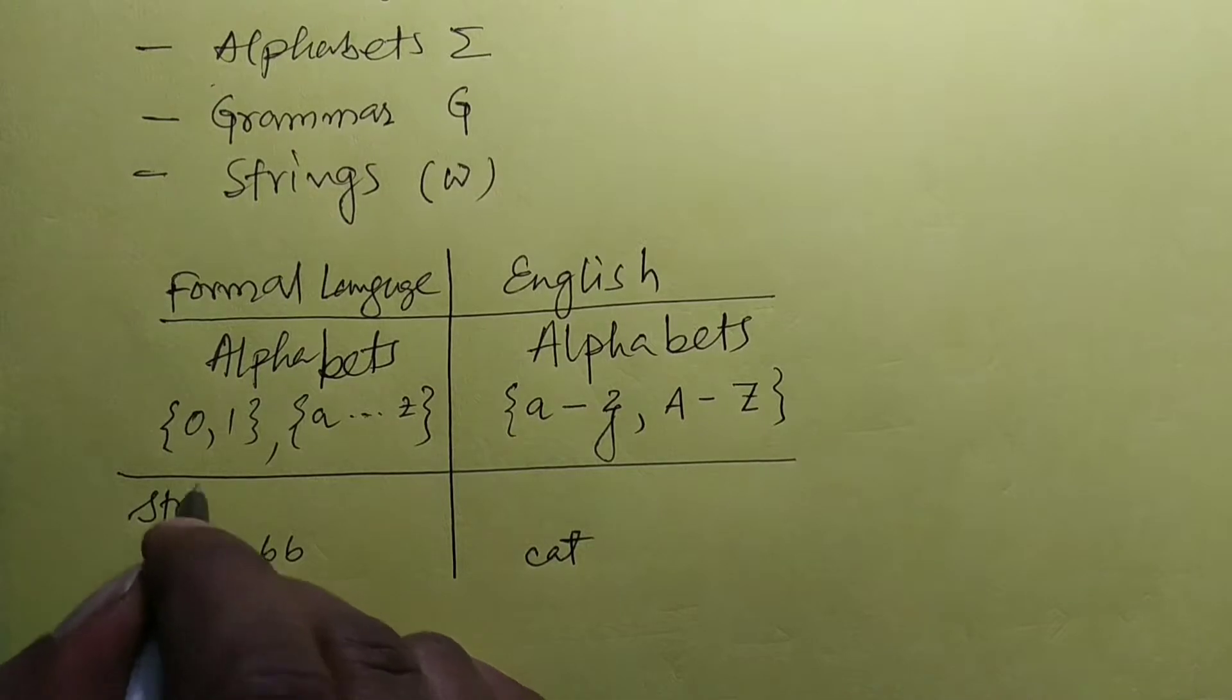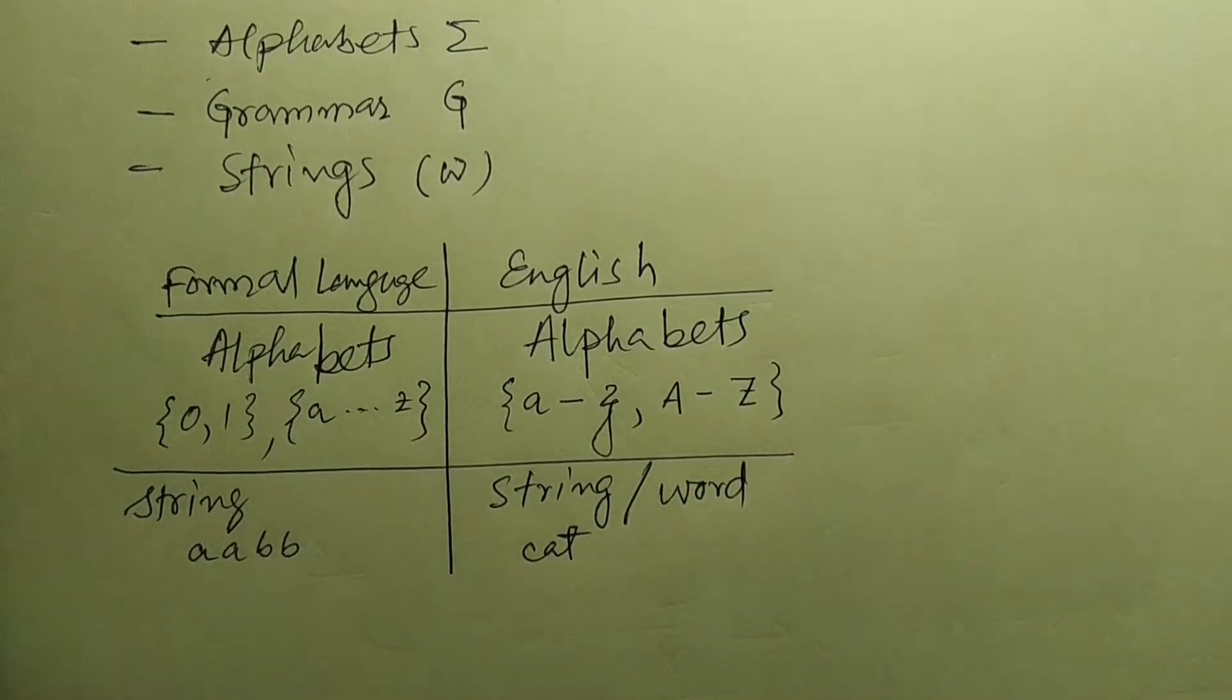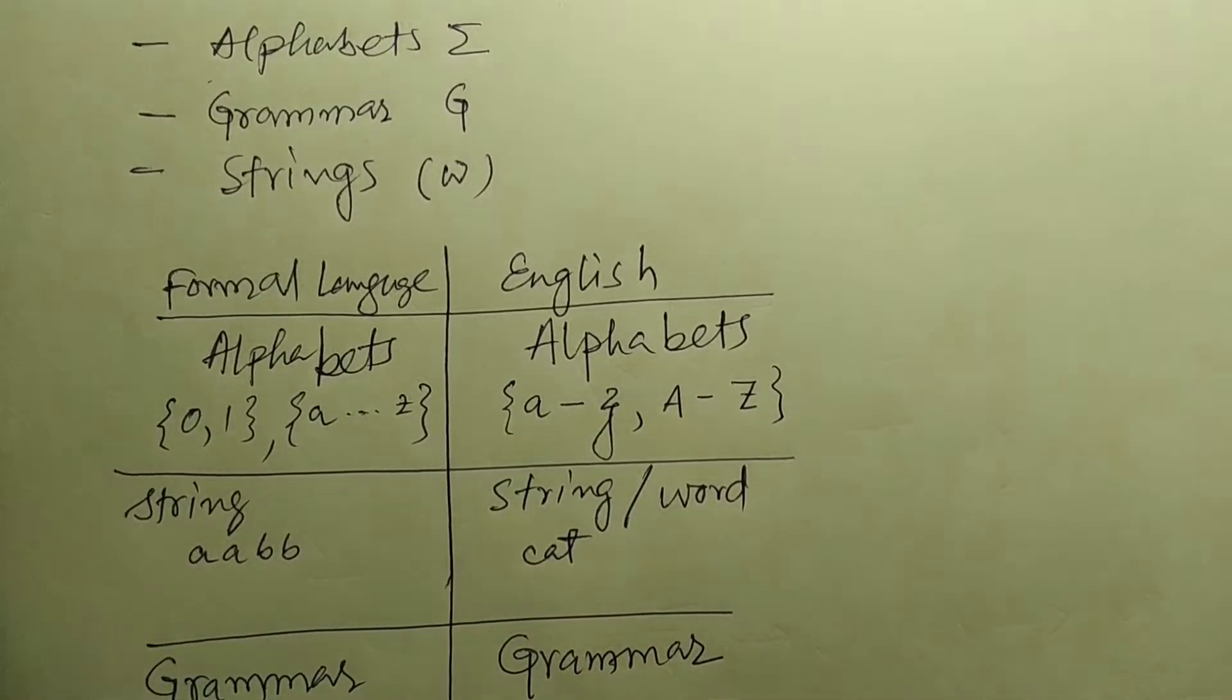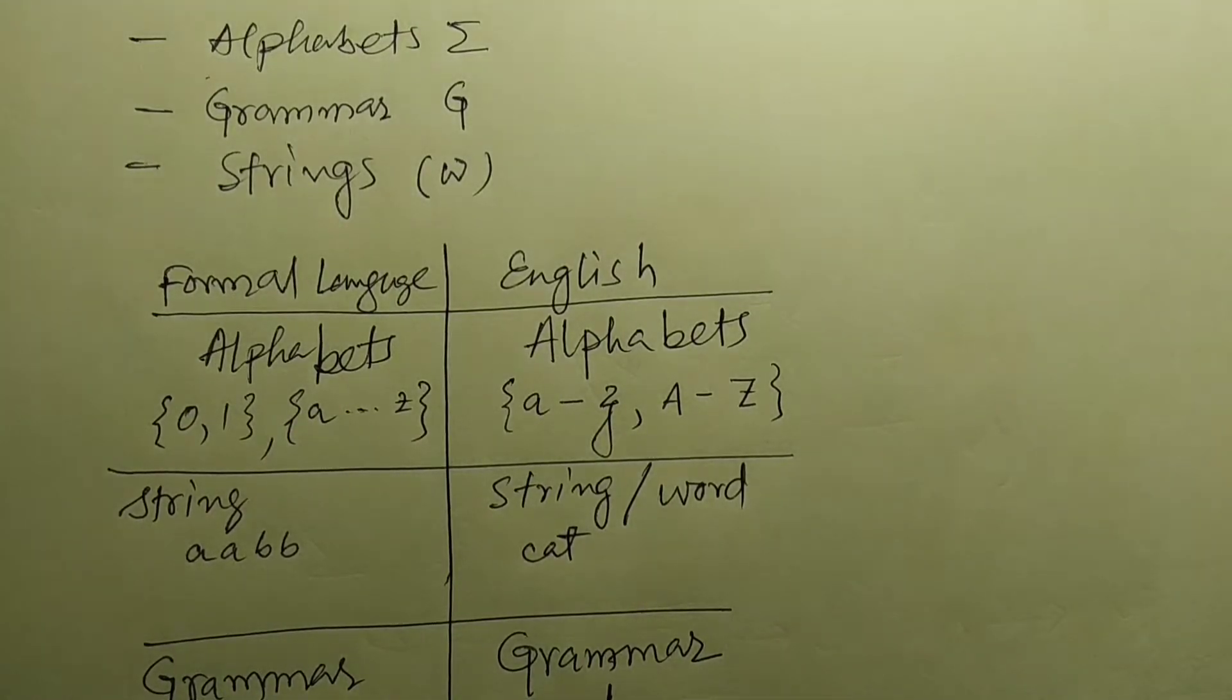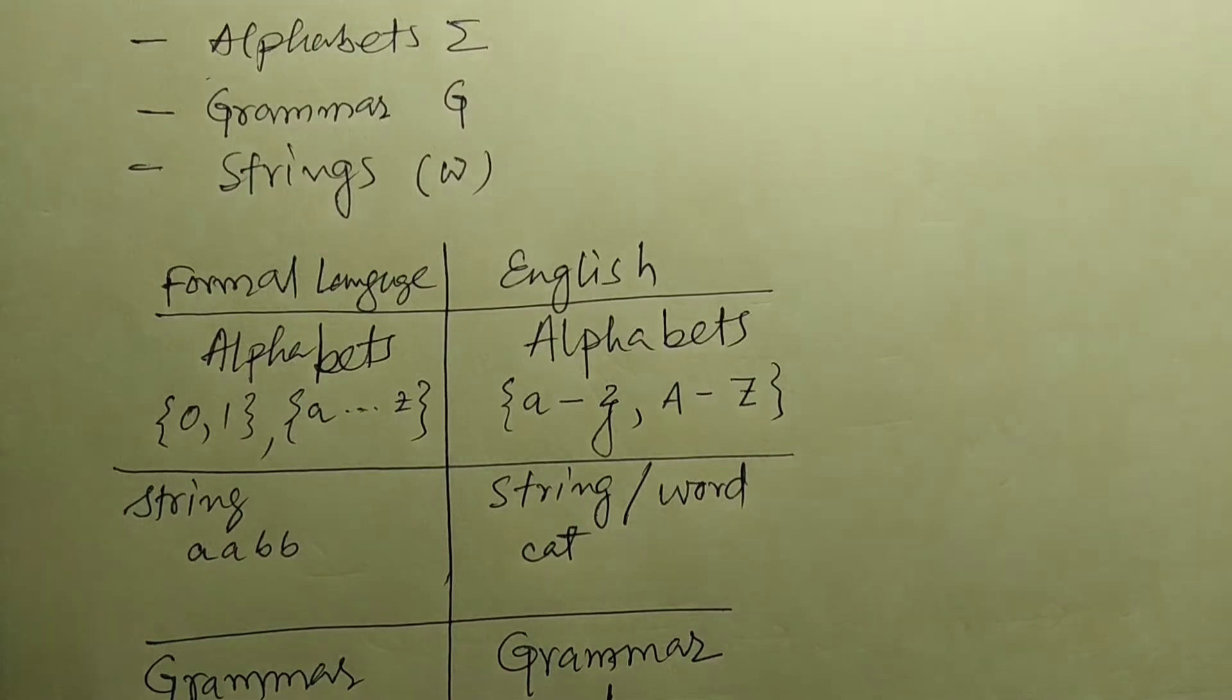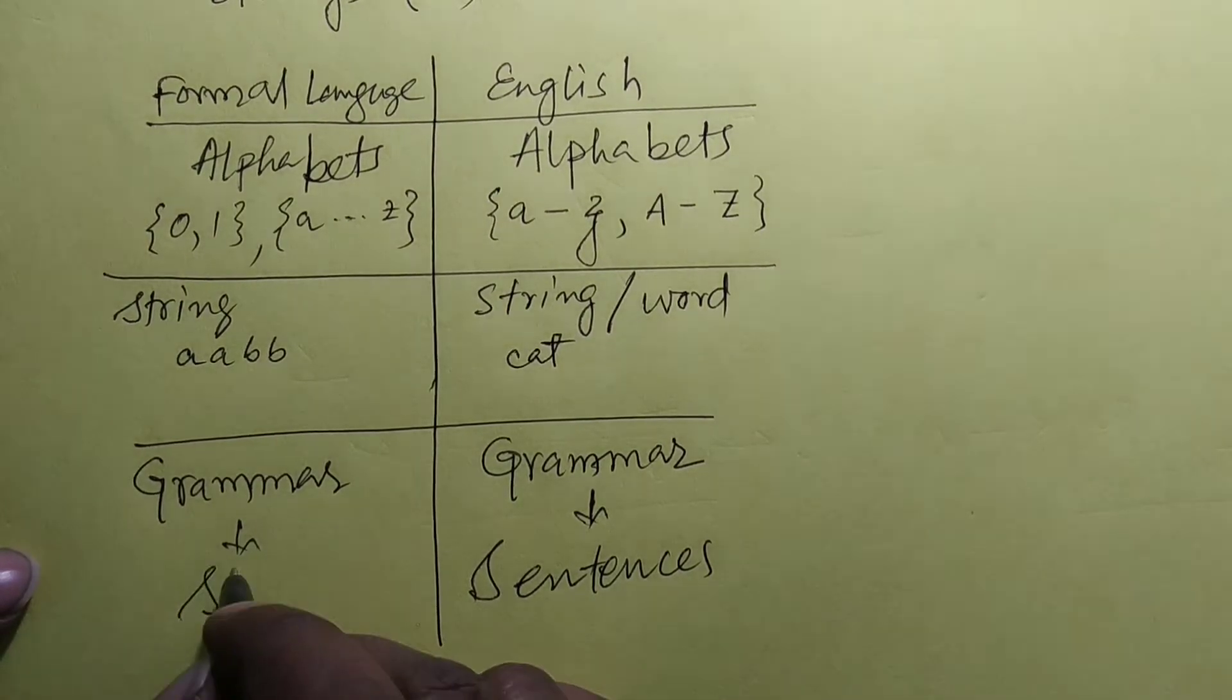Another is word. But when the grammar comes in the picture, in both the cases if we compare what happens - in English, grammar generates sentences. But here grammar generates what? Here it generates strings.